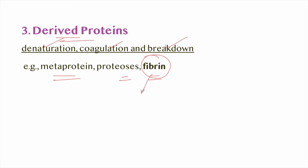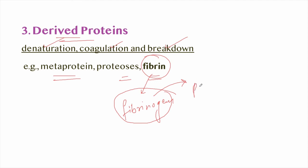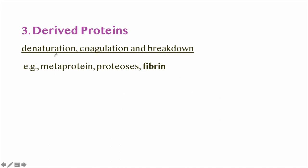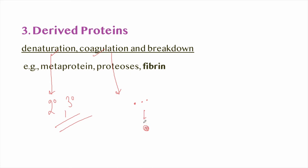Denaturation of proteins is the disruption of secondary and tertiary structure — it is the changing of properties of a molecule. Coagulation is the action of converting the liquid state of the molecule into a solid or semi-solid state by sticking molecules together. A common example of coagulation is when you add lemon juice to milk — it causes milk proteins to clump together and form a coagulate.